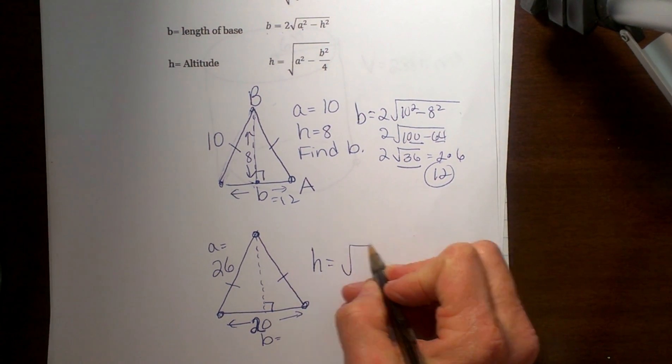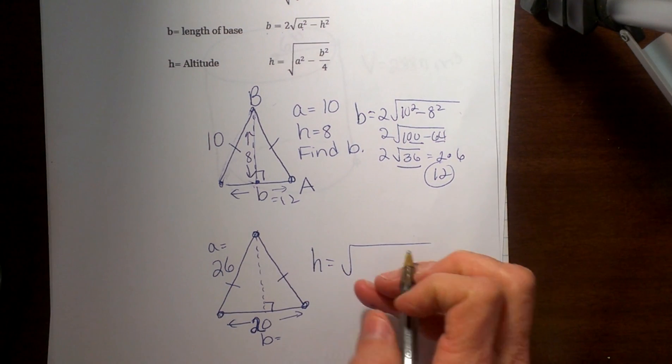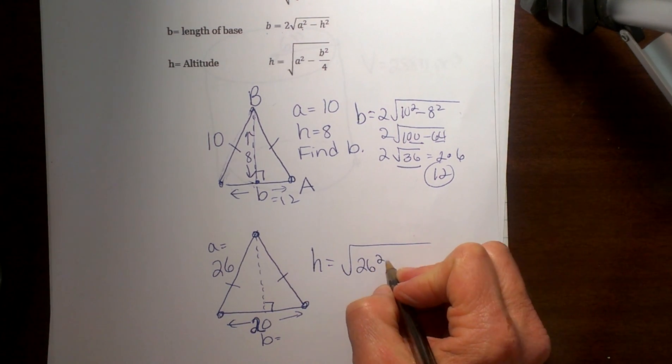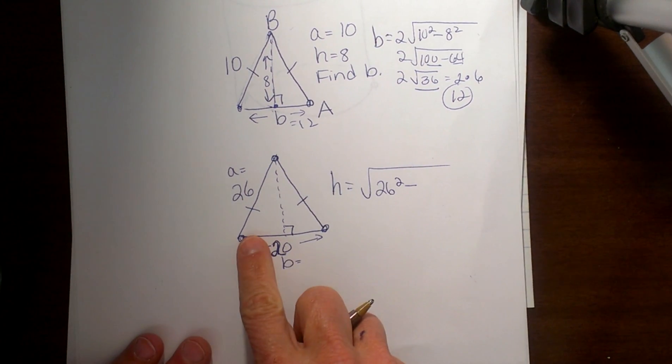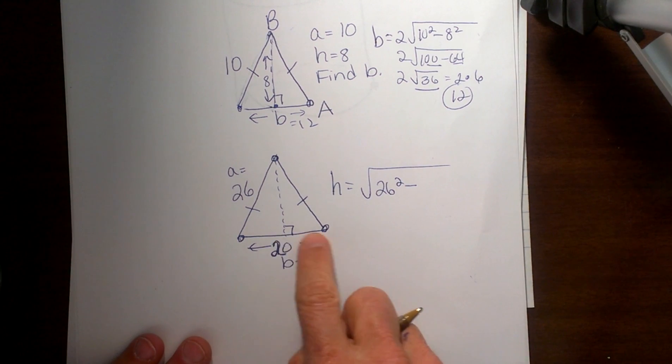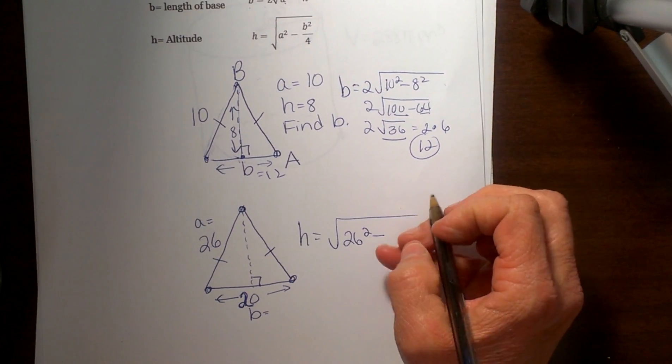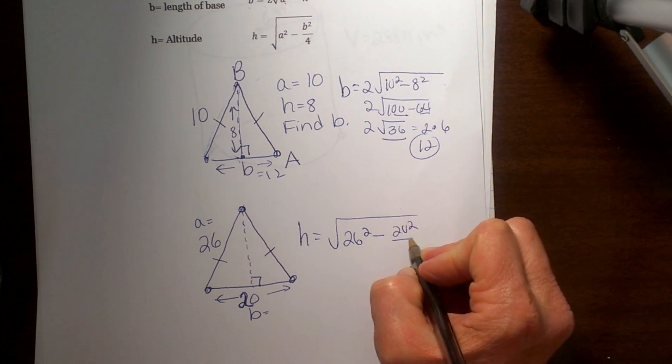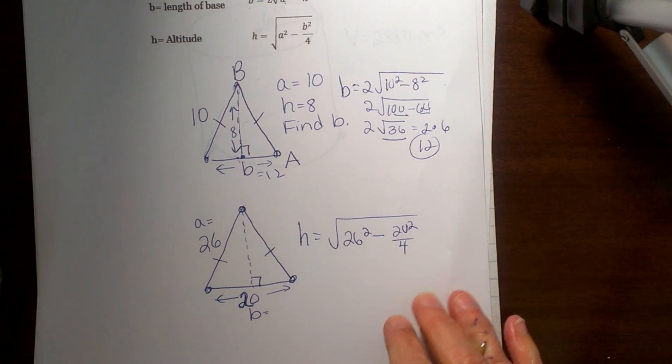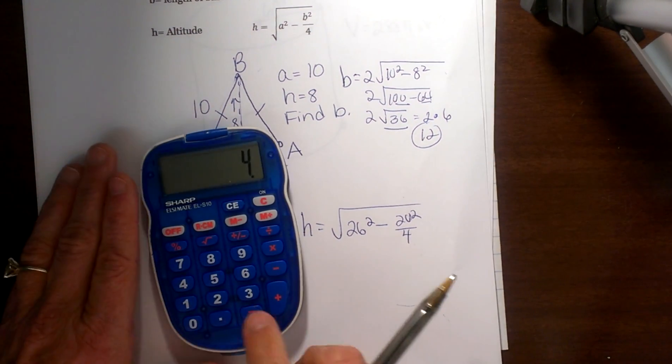Well, a is the length of our leg, so that is 26, minus b² over 4. Well, b is my whole base, so I am going to take my base and square it and then divide that by 4. These are some big numbers, so let's do this.